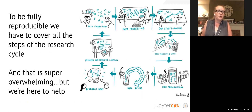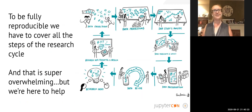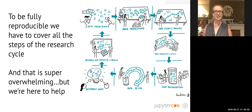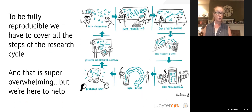So it's great — we should all be reproducible. But as you start to think about being reproducible across the whole of the research life cycle, you realize just how many steps there are in that process. You have to be reproducible at data collection, data processing, study and analysis, and how you publish that information.